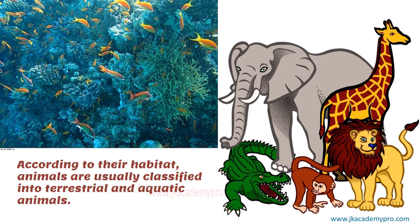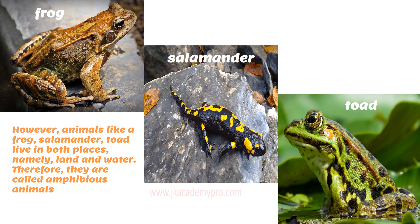According to their habitat — that is, where they live — we can classify the animals. Animals that live on land are called terrestrial animals, and animals that live in water, such as fishes, the octopus, and turtles, are called aquatic animals. But there are animals like the frog, the salamander, and the toad that live both on land and in water — they can survive in both environments. Such animals are called amphibious animals, or amphibians in short.